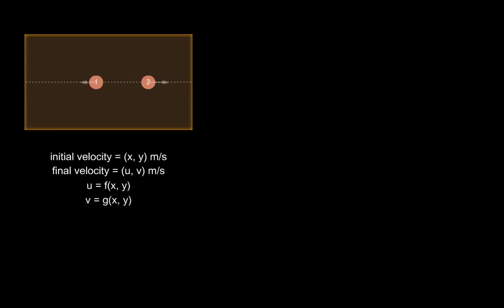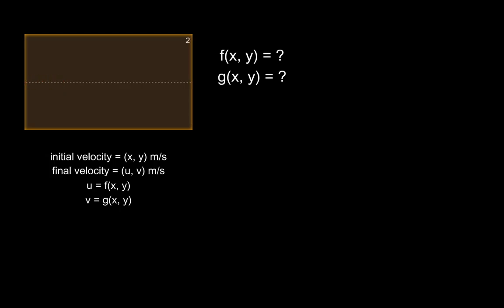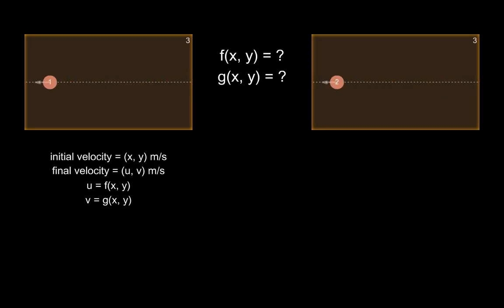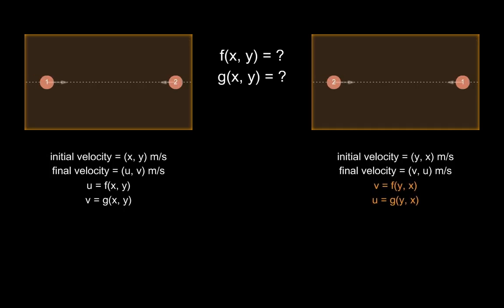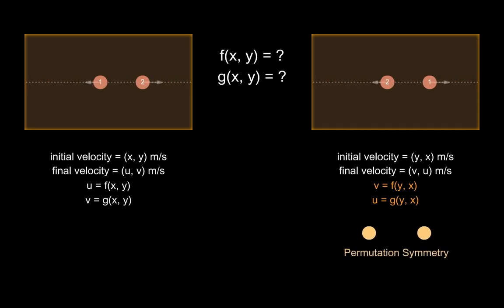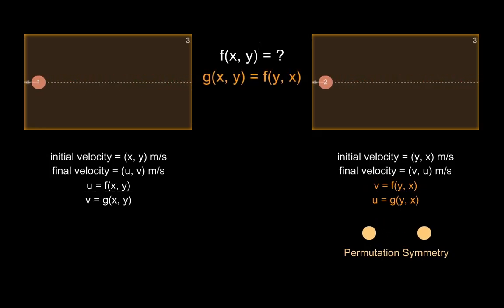Let's consider the collision of two identical particles. The initial velocities are x and y, and the corresponding final velocities are u and v, given by functions f and g we're trying to find. If we swap their labels — calling the first particle 2 and the second particle 1 — the initial velocities become y and x, and the final velocities become v and u. The laws of physics remain the same regardless of what we call these particles. This is permutation symmetry: any permutation of identical objects doesn't change anything. So v equals f of y,x and u equals g of y,x. Substituting, we find we only need to find f in order to resolve this collision.